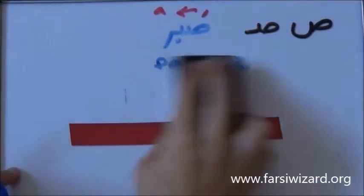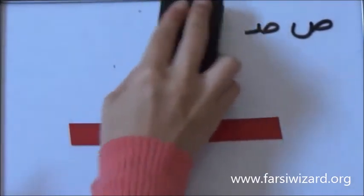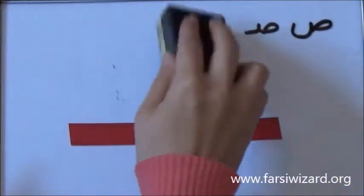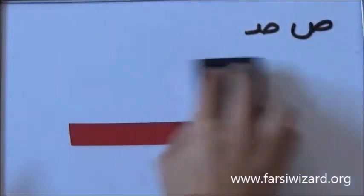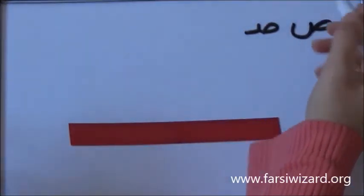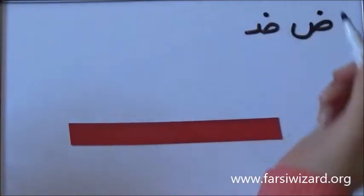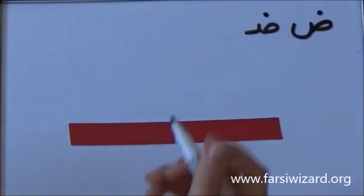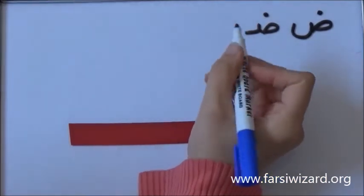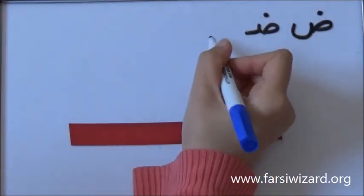So, now we're going to see how we can read the letter Zod in a word. Now this letter honestly is not that common. You wouldn't see it frequently in Persian words. It's one of the less common versions of Z we have in Farsi. The way it's written, remember one stroke, then one dot on top.